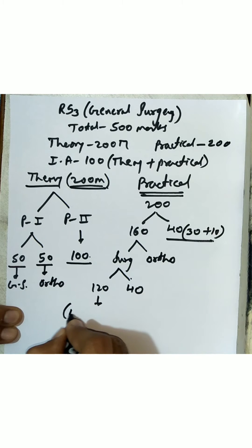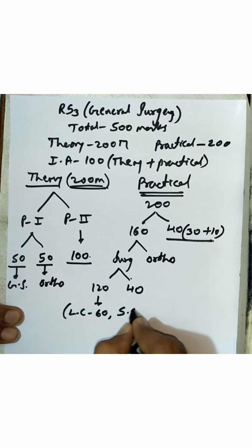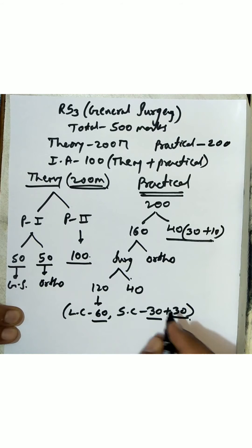This 120 marks in general surgery practicals is further split up into long case of 60 marks and two short cases of 30 plus 30. You have one long case and two short cases, so that is 60 plus 60 constituting 120 marks.